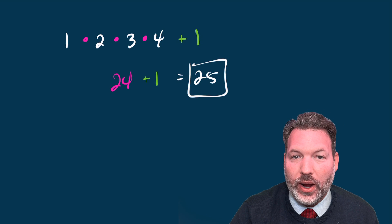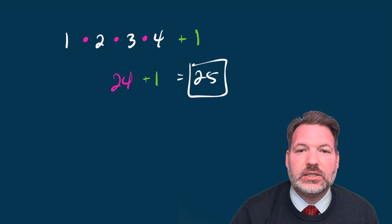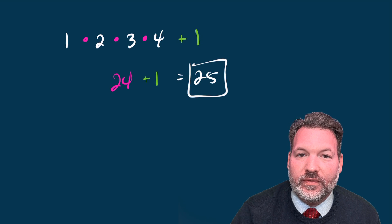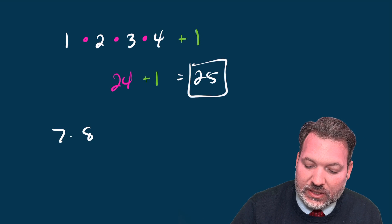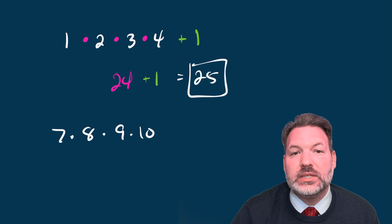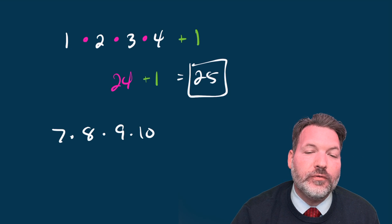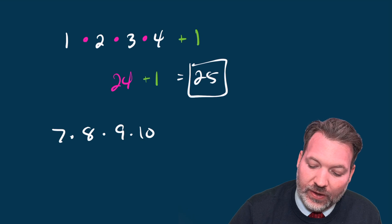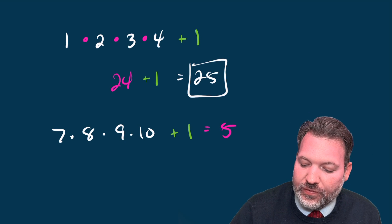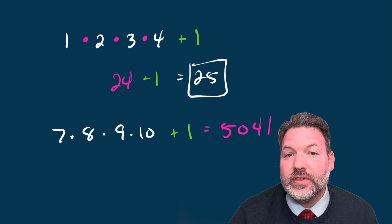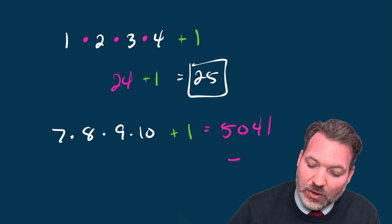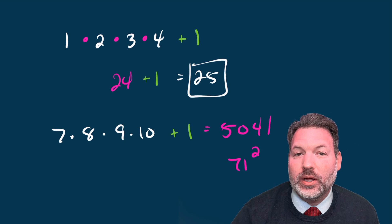But again, this is not unique to just one, two, three, four, five. It'll work with any four consecutive integers. Think of something like seven, eight, nine, and 10. Multiplying seven times eight times nine times 10 is going to give you 5040. If you add one to 5040, you get 5041. 5041 is in fact a perfect square. It just so happens to be 71 squared.